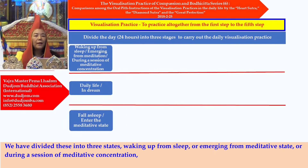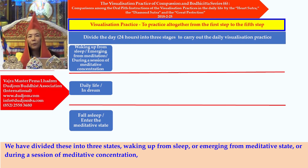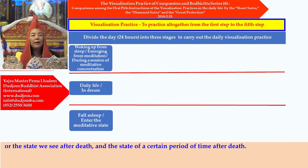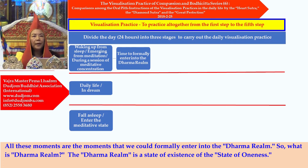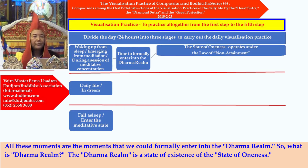We have divided these into three states: waking up from sleep, or emerging from meditative state, or during a session of meditative concentration; or the state we see after death; and the state of a certain period of time after death. All these moments are the moments that we could formally enter into the Dharma realm. The Dharma realm is a state of existence of the state of oneness.